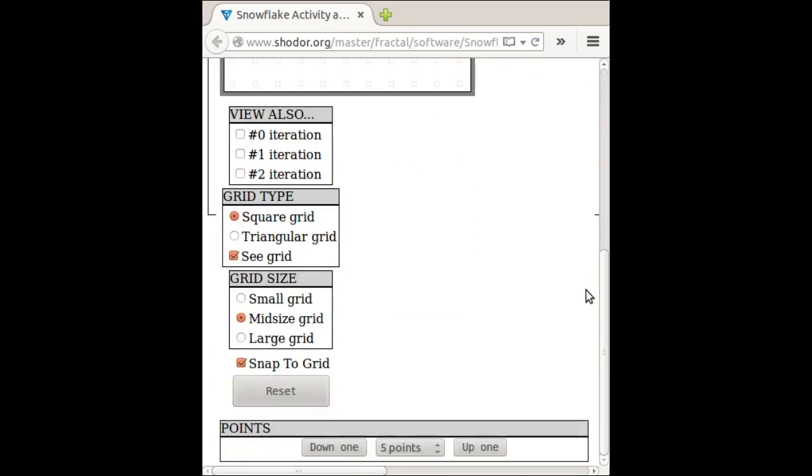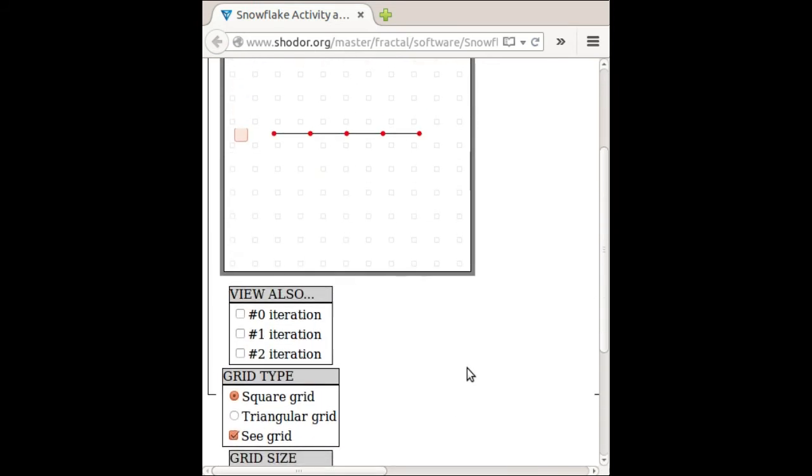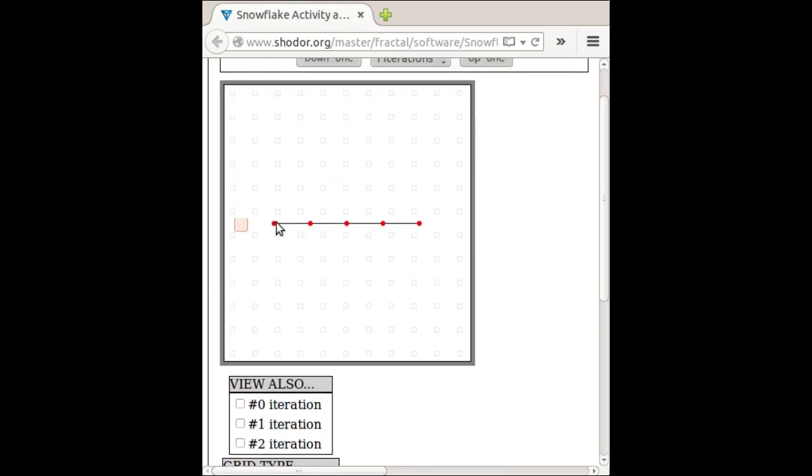So first, let's go down here, and I'm going to make sure that Snap To Grid is chosen. And what that'll do is, as I move these red points around, it'll make them go to points on the grid. There's a very faint grid in gray. It might be hard to see on the screen. But I can make the points sort of stick there. So I'm going to move these points around until we have something like this.